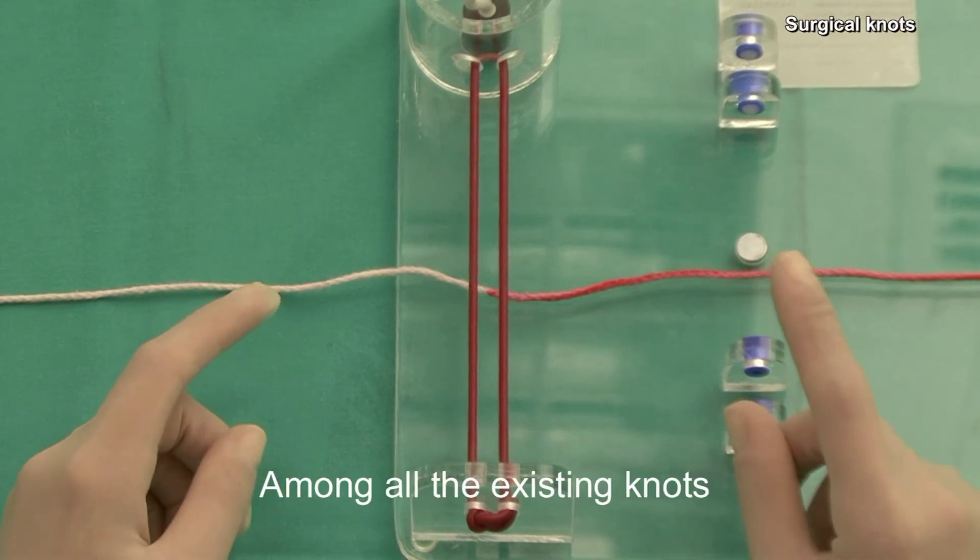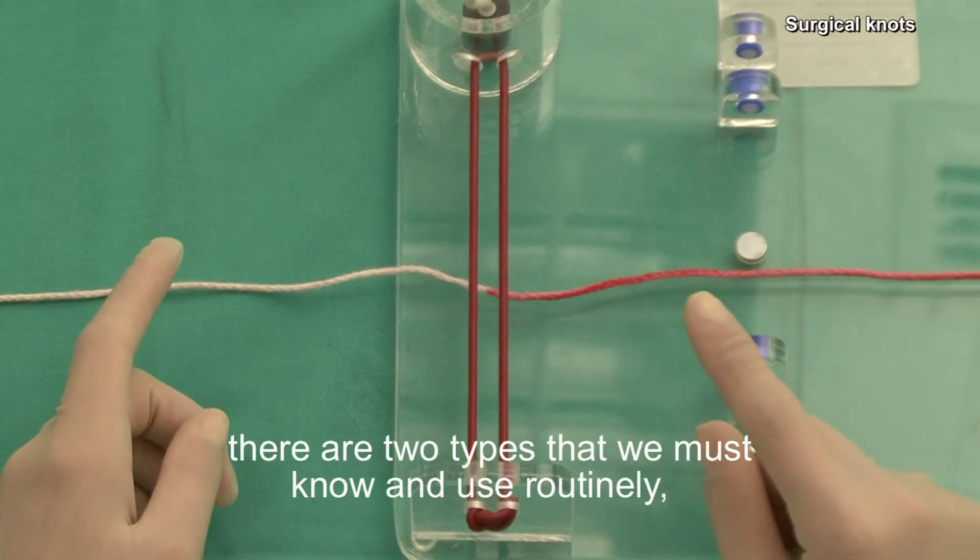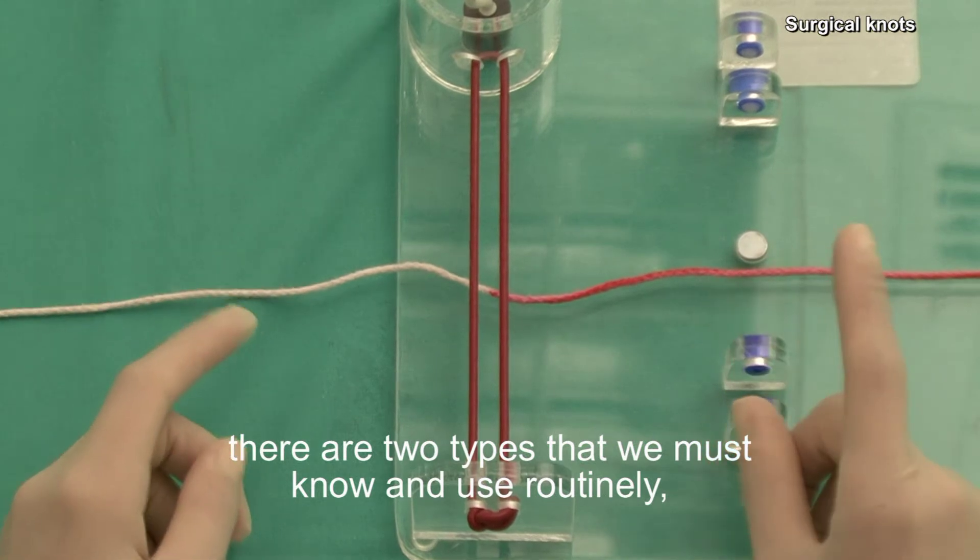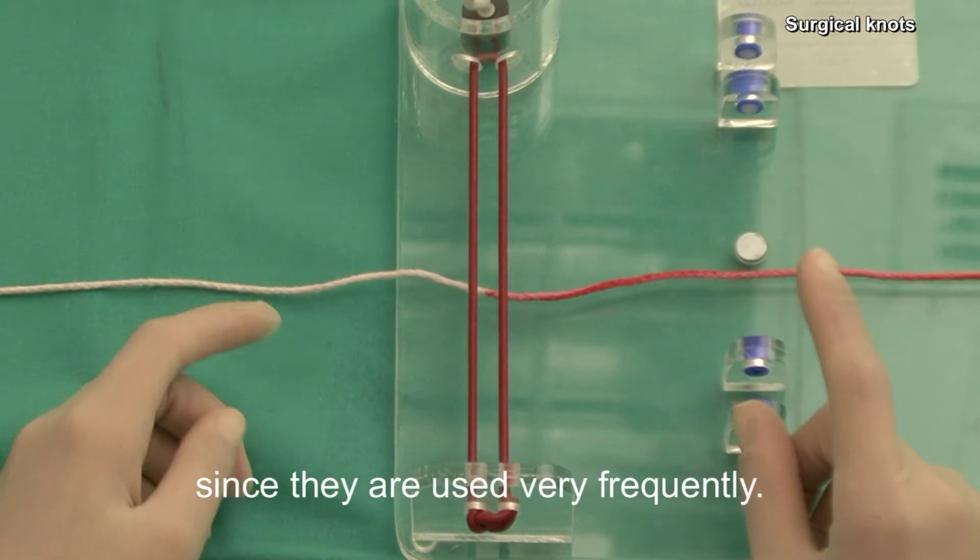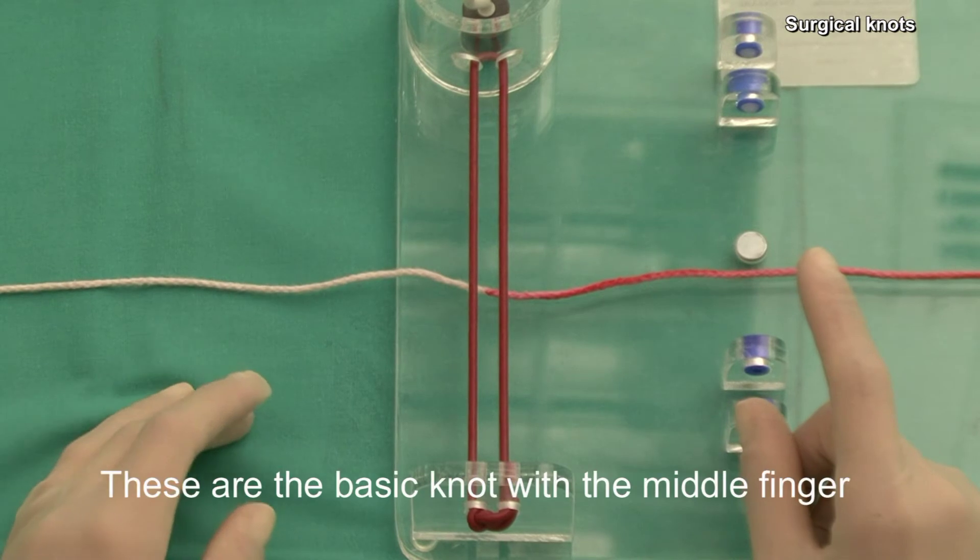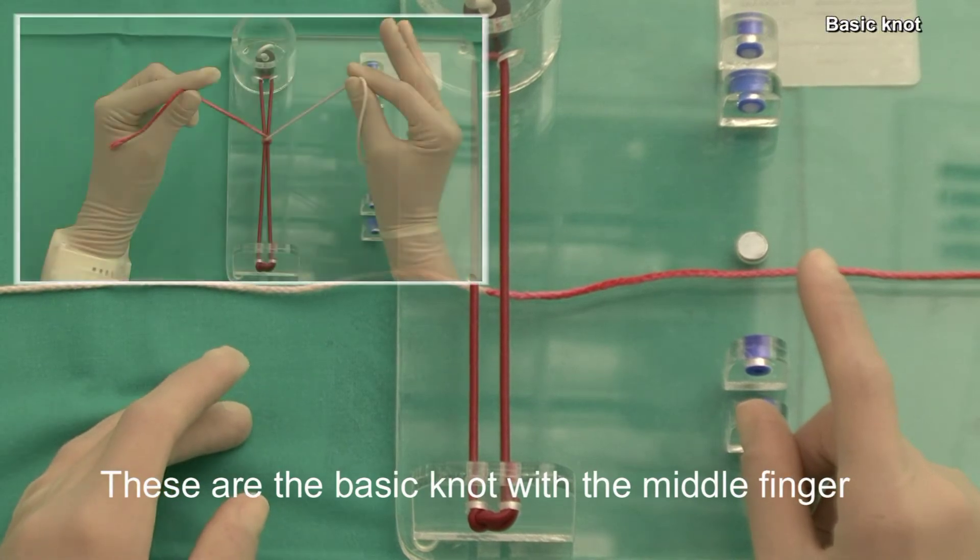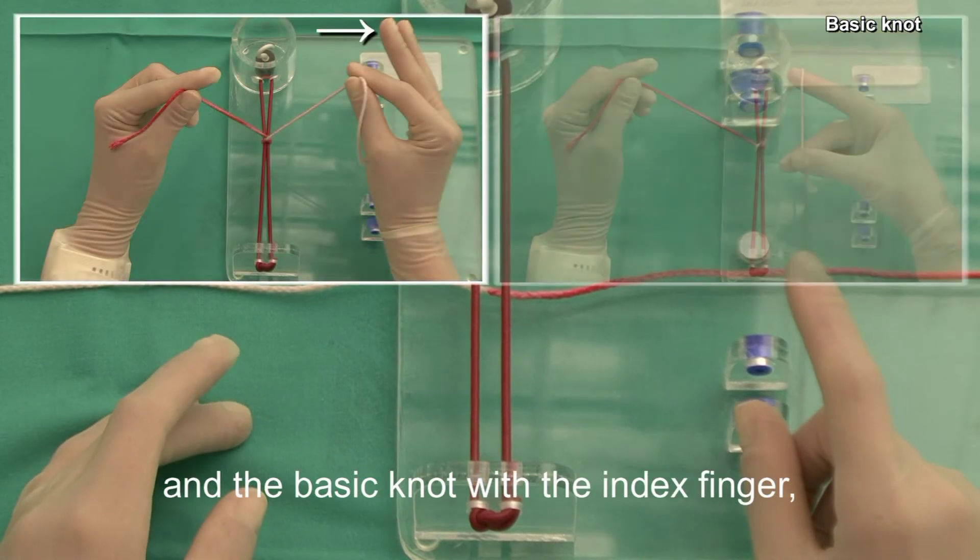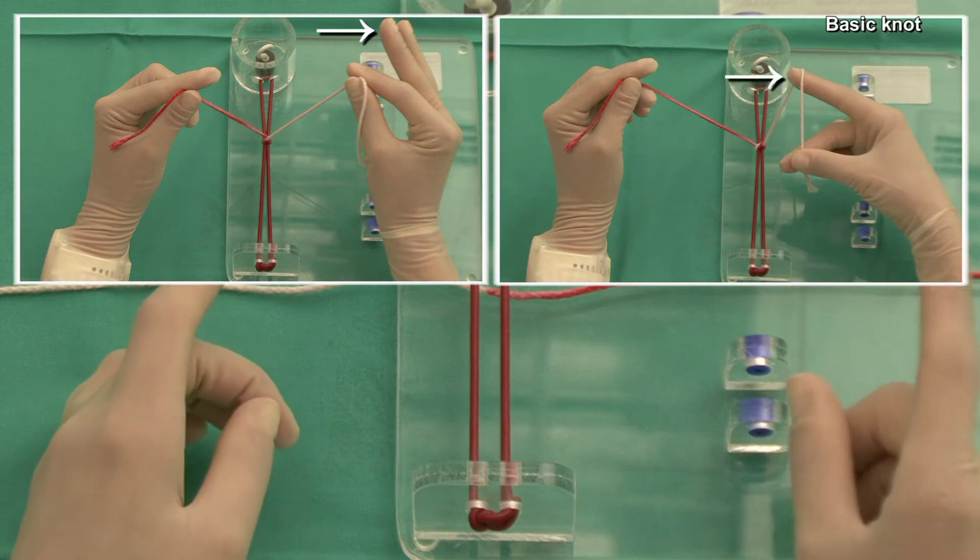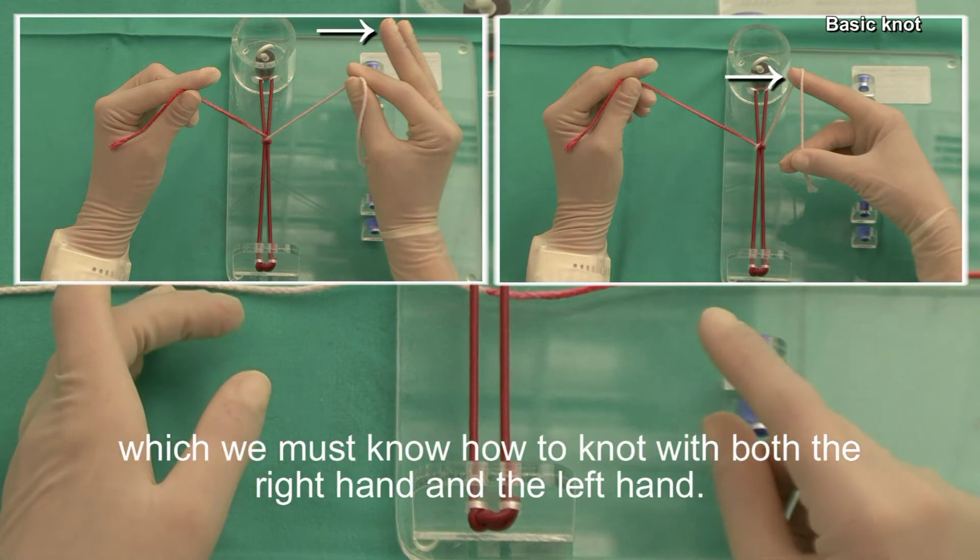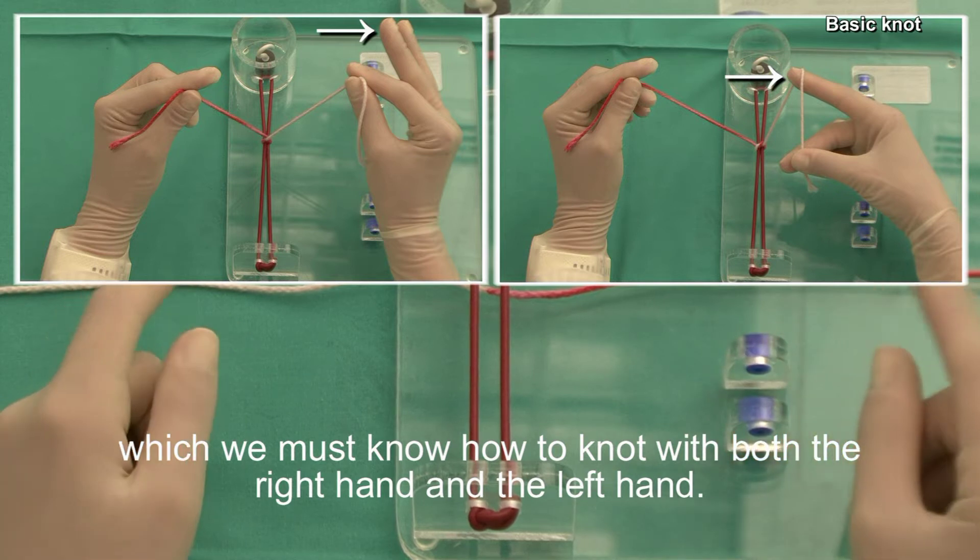Among all the existing knots, there are two types that we must know and use routinely, since they are used very frequently. These are the basic knot with the middle finger and the basic knot with the index finger, which we must know how to knot with both the right hand and the left hand.